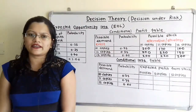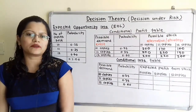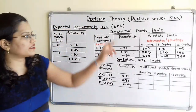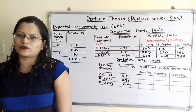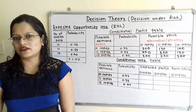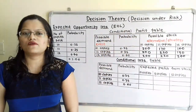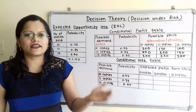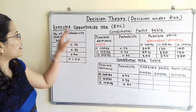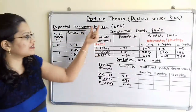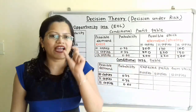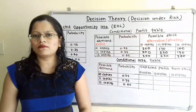Now we apply the second criterion to find the number of copies to order — that is, expected opportunity loss (EOL). The step-by-step procedure: first, prepare the conditional profit table (already done). Then from that, prepare the conditional loss table. Then prepare the expected loss table. Since this is a loss measure, we select the alternative with minimum expected opportunity loss.